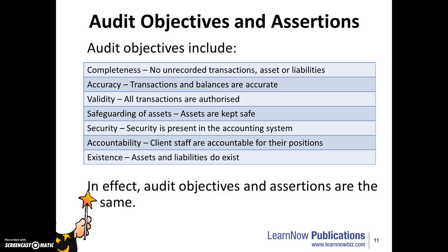Audit objectives and assertions include: Completeness — no unrecorded transactions, assets, or liabilities appear. Accuracy — transactions and balances are accurate. Validity — all transactions are authorised. Safeguarding of assets — assets are kept safe. Security — security is present in the accounting system. Accountability — client staff are accountable for their positions. And Existence — assets and liabilities do exist. These objectives and assertions are effectively the same.